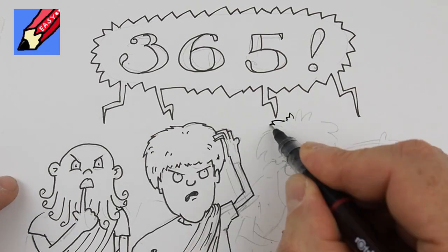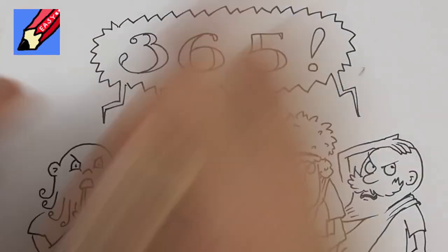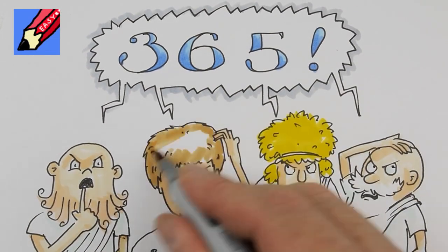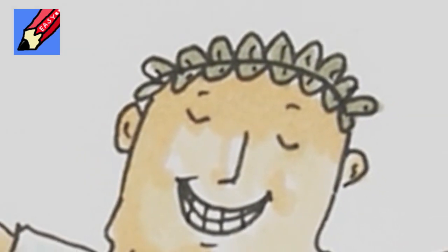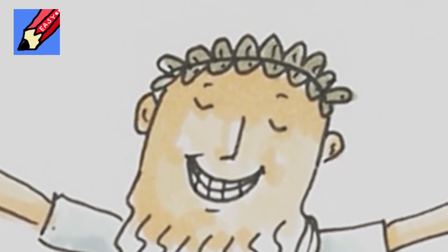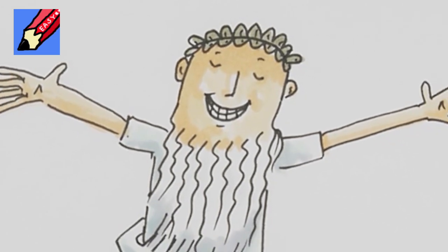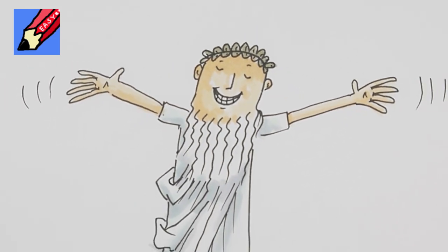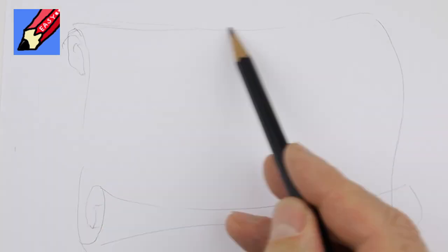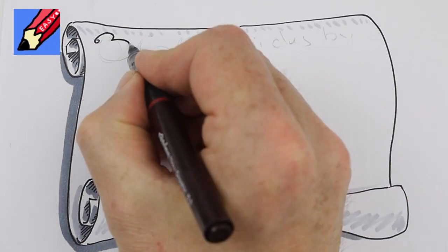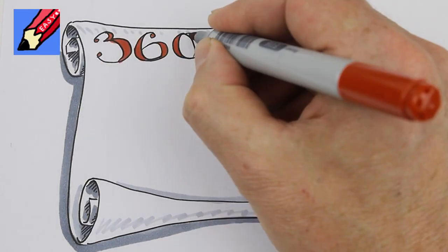But there are 365 days in the year, Euclid's friends protested. Well, strictly speaking you're right, said Euclid, but 360 is a much better number. Look, 360 can be divided by a whole bunch of numbers, which makes it really easy to work with.